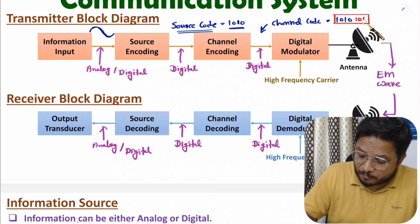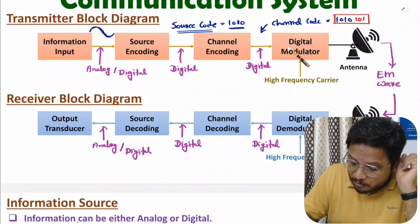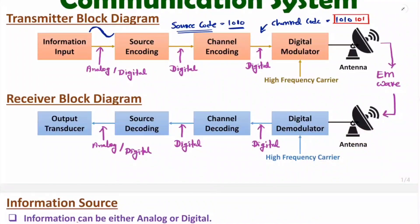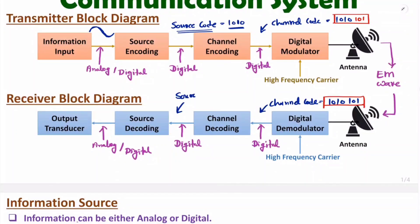Using this channel code, at the receiver side, any error that occurs can be resolved. The channel code is given to the digital modulator and after modulation, the high frequency signal is transmitted. Now let us assume we have received the same code — 1010101. After demodulation, we have this channel code at the receiver. The channel decoding removes the redundant bits, giving us back the source code 1010.